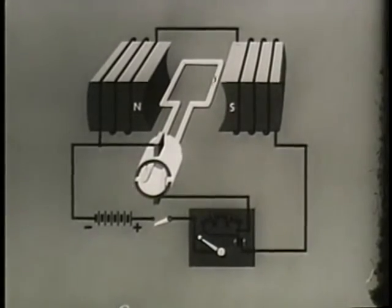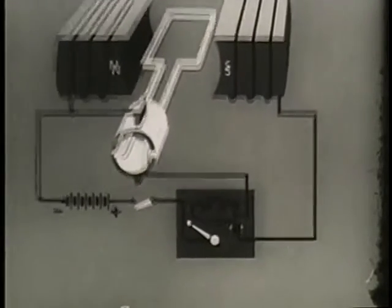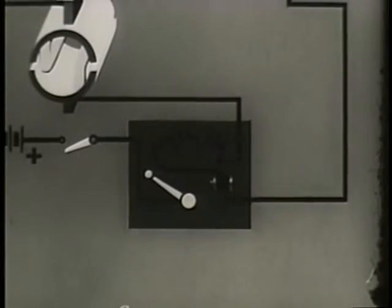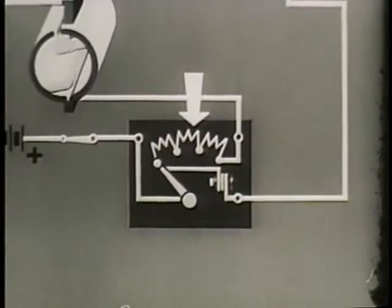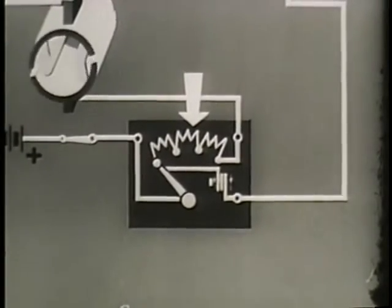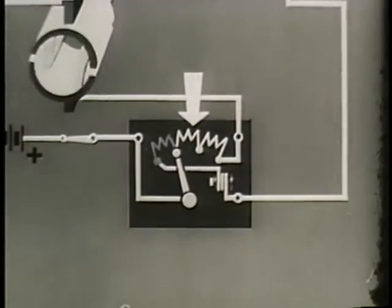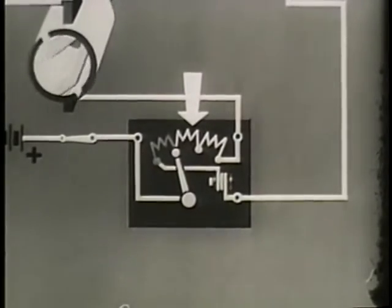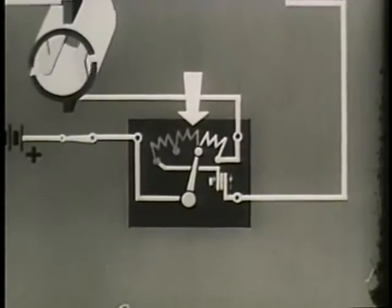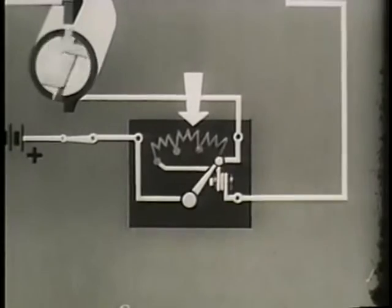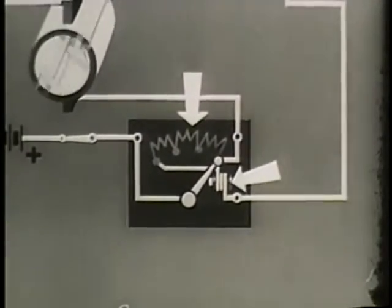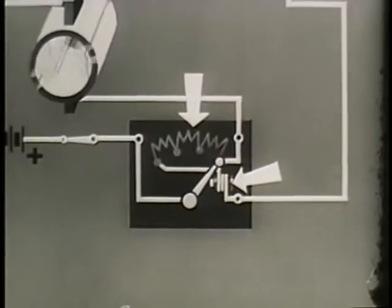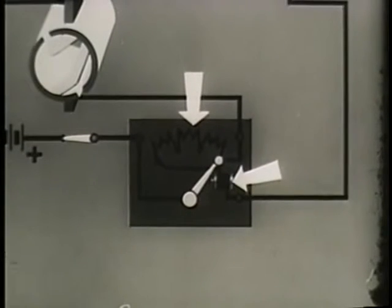Starting boxes are used with DC motors to avoid the application of full current before the CEMF is built up. In the starting position, the circuit to the rotor windings is closed through a series of large resistance coils. As the lever of the switch is moved, rotor speed and CEMF build up gradually and the resistance coils are subsequently cut out until running speed has been reached. The lever is held in the fully open position by an electromagnet. If for any reason the power should fail or the field coil open, the electromagnet becomes de-energized and the lever is returned to the starting position by spring action.